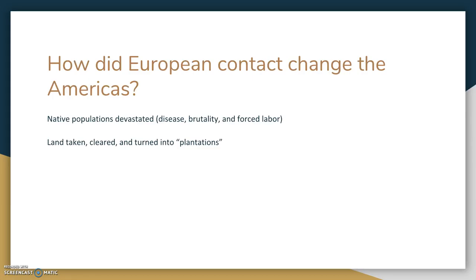How did European contact change the Americas? The native population was devastated. The Europeans brought over diseases that the native Americans did not have any immunity to because they had not been exposed to them, such as smallpox, chickenpox, measles, and mumps.